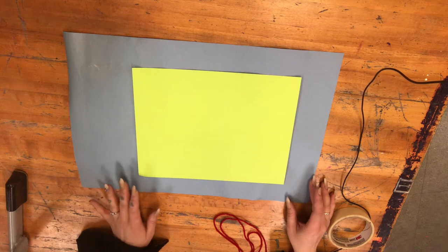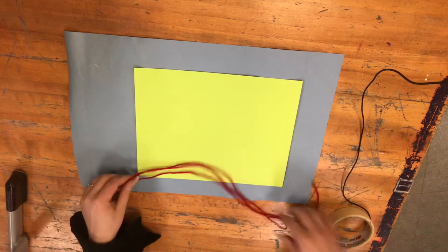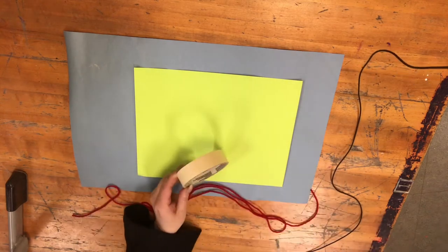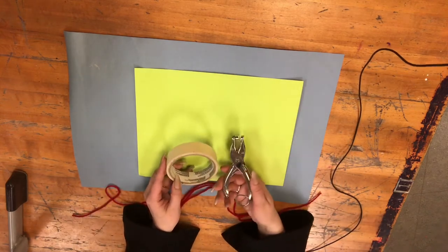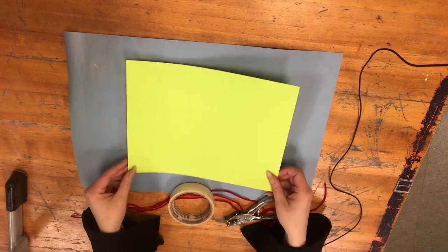In today's Art Lab, I will show you how to sew without a needle. We'll be using yarn, tape, a hole puncher, and a piece of paper. That is all we'll need. We don't need a needle for this.